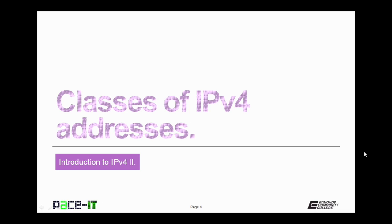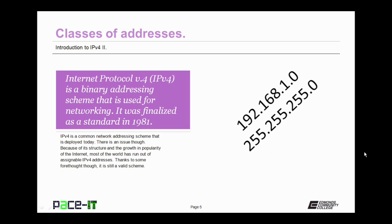Let's begin by talking about classes of IPv4 addresses. Internet Protocol version 4, IPv4, is a binary addressing scheme used for networking. It was initially finalized as a standard in 1981 and is a common network addressing scheme still being deployed today. There is an issue though: because of its structure and the growth and popularity of the internet, most of the world has run out of assignable IPv4 addresses. But thanks to some forethought, it's still a valid scheme today.